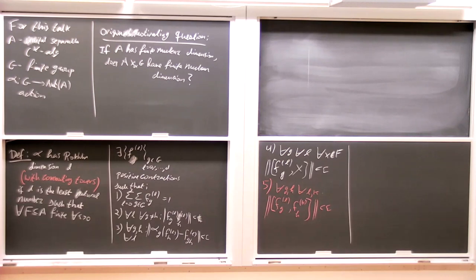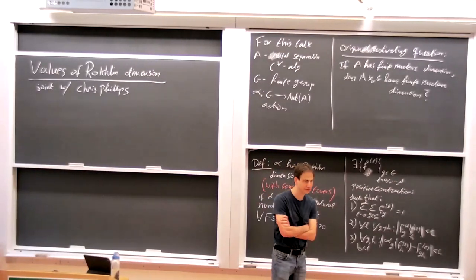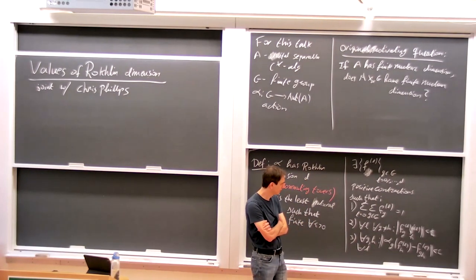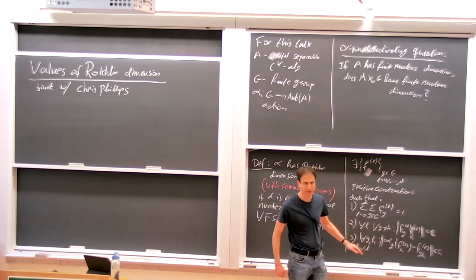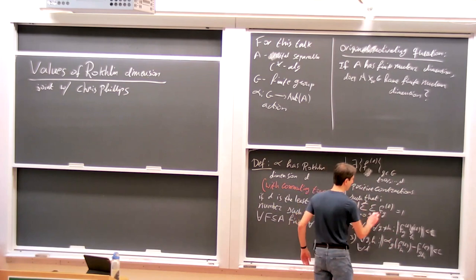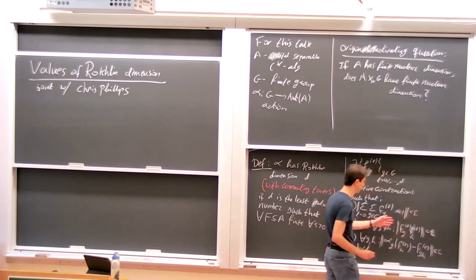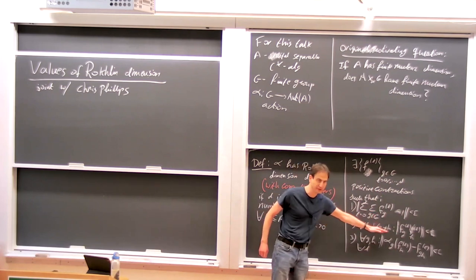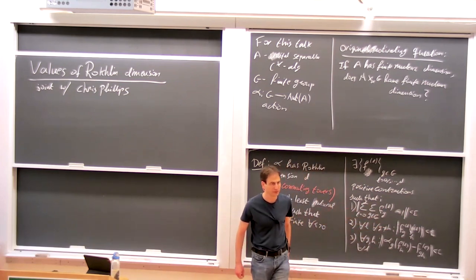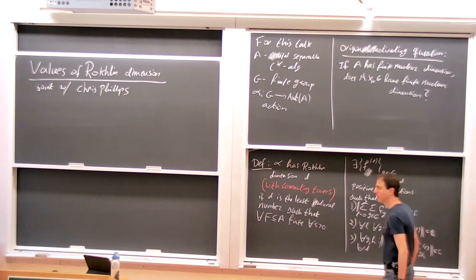The upshot is yes, and I want to explain the results and discuss the ideas of the proof. For finite group actions you have some flexibility: you can make some of the epsilon conditions exact, but I don't think you can make all of them zero simultaneously. It doesn't play an important role here.